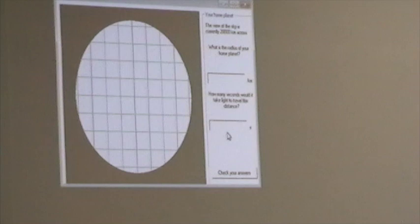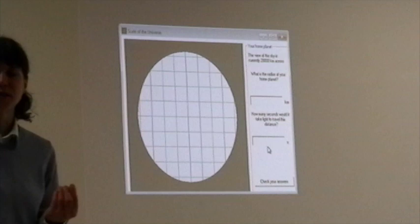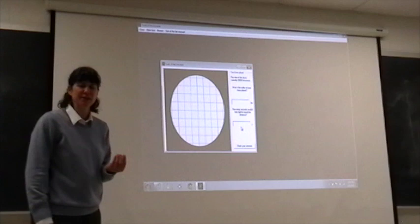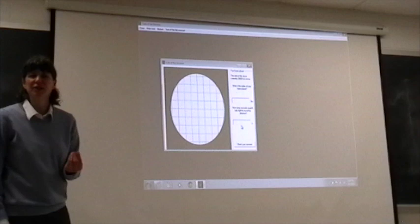To find the time, what you do is you take the distance and you divide by the speed. The speed of light that you would use in this case is 3 times 10 to the 5th kilometers per second. The more common value for C that you may have heard before is 3 times 10 to the 8th meters per second.